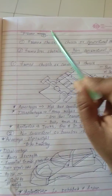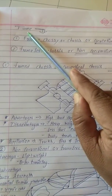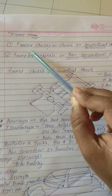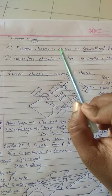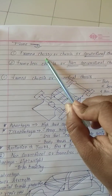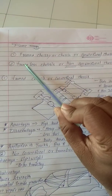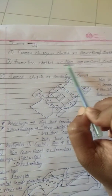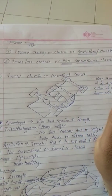Hi everyone, today we will be discussing about the frame. Basically, the frame is of two types. First is the frame chassis or the conventional chassis. Second is the frameless chassis or the non-conventional chassis.